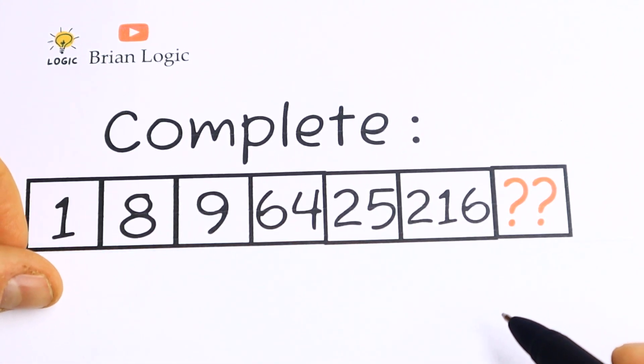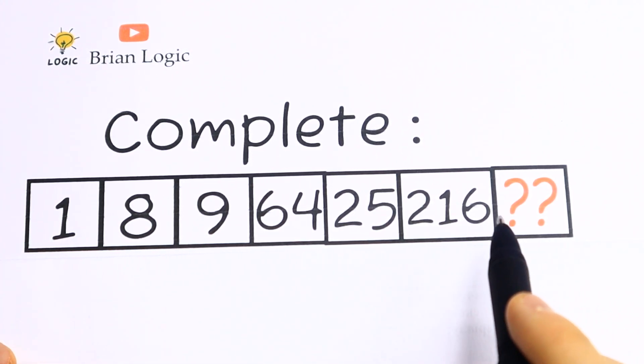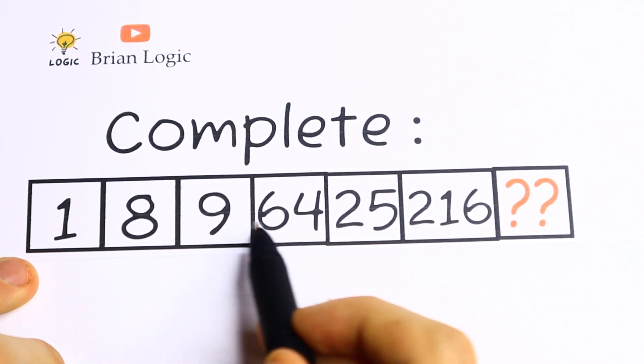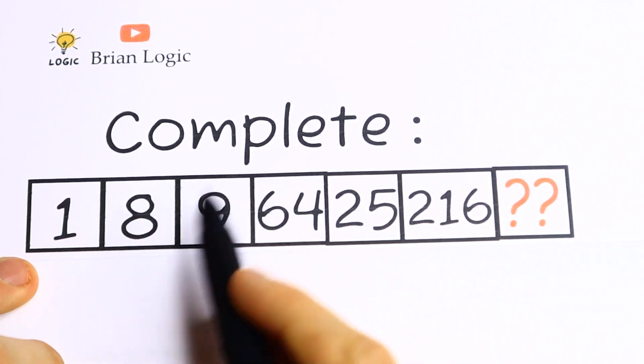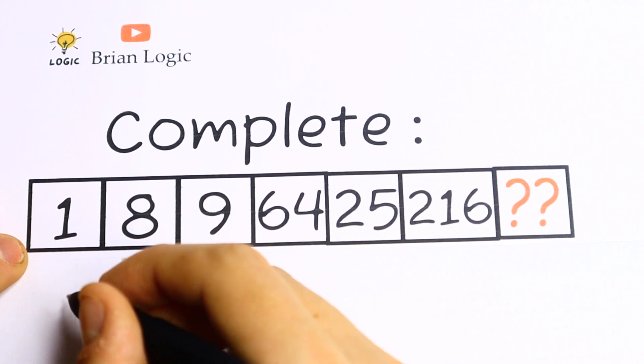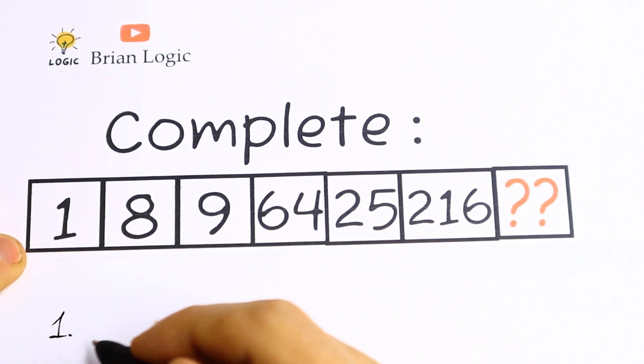We have 1, 8, 9, 64, 25 and 216. What is the pattern between all of these numbers? If you were talking about addition or subtraction, as for me I don't see any common pattern. But take a look what I see right now, that this 1 we can write as 1. Let's leave this 1 as 1.